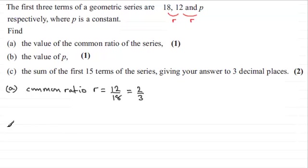Okay, well, in part b now, we've got to find the value of p. And this is very straightforward, because all you've got to do is to do 12 multiplied by r, it will give us p. So, p would equal 12 multiplied by the common ratio r of 2 thirds. So, 3 will go into 12 four times, 4 twos are 8. Okay, so p is equal to 8.